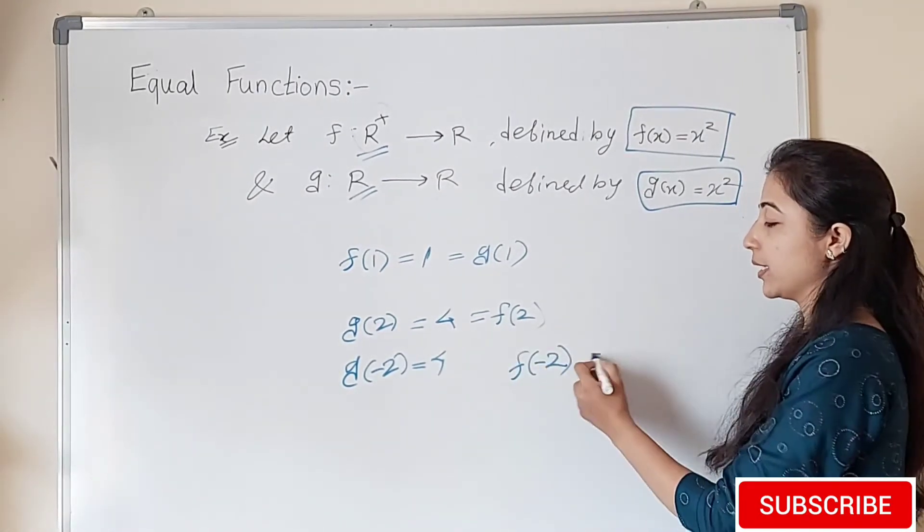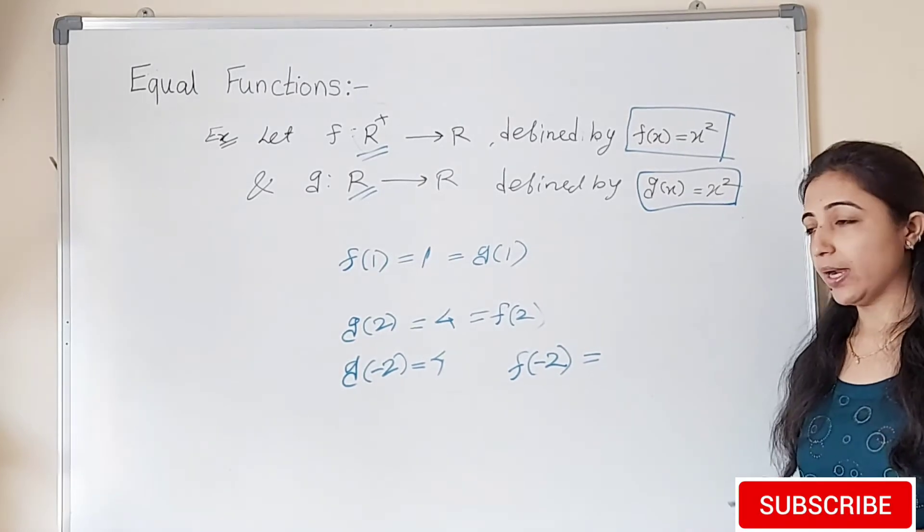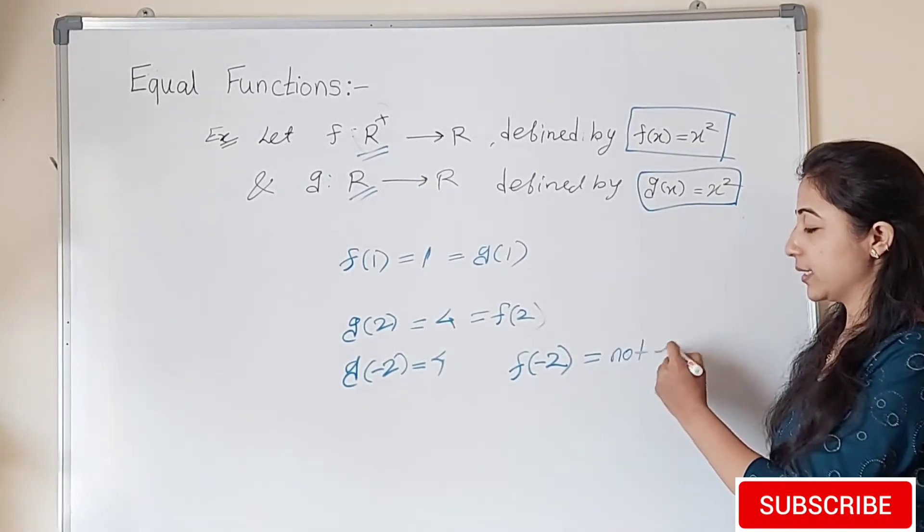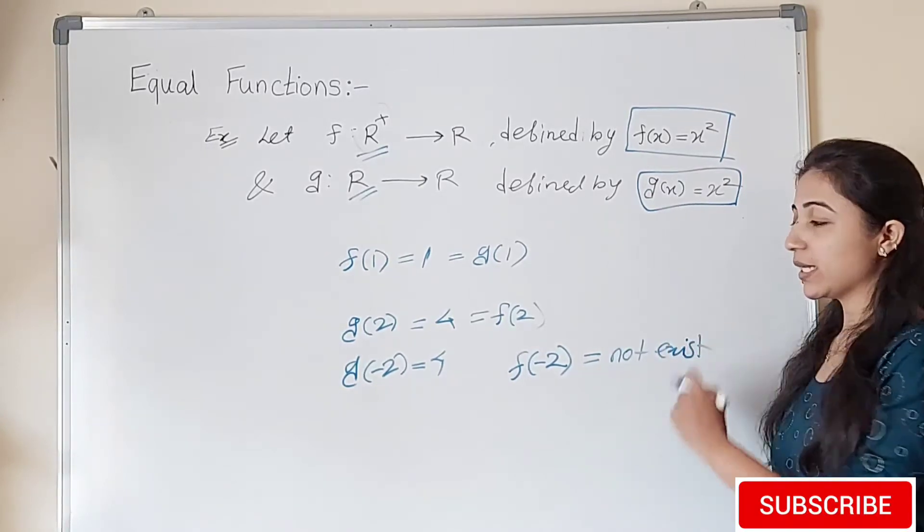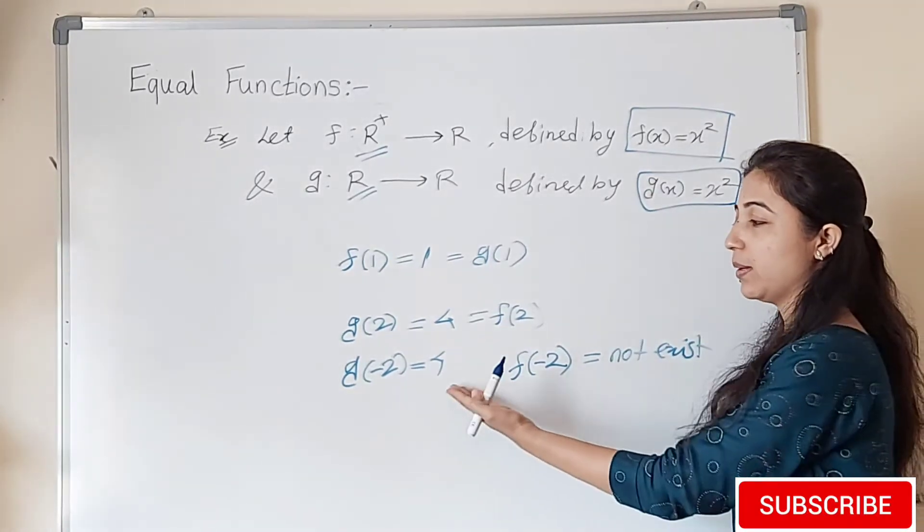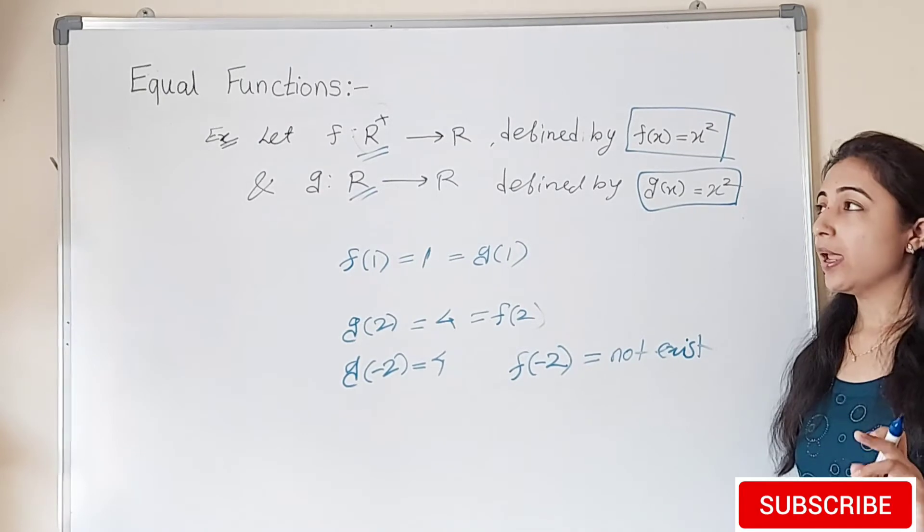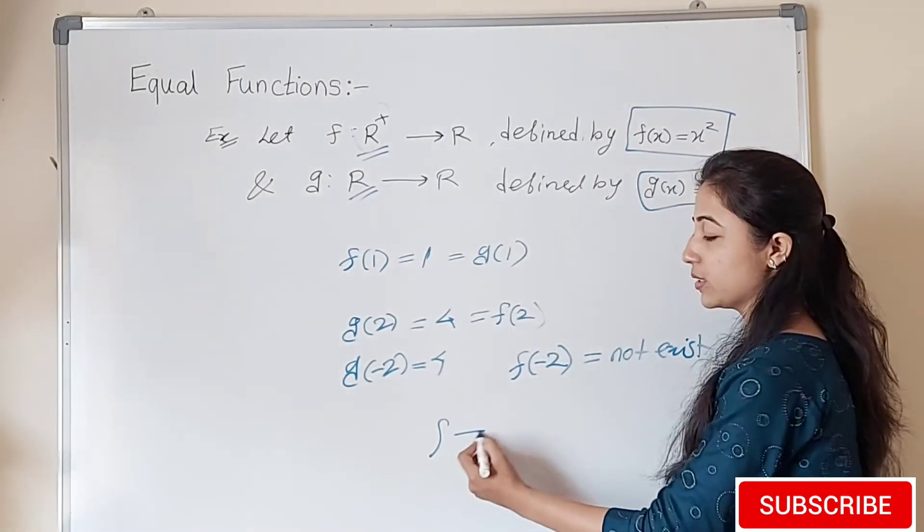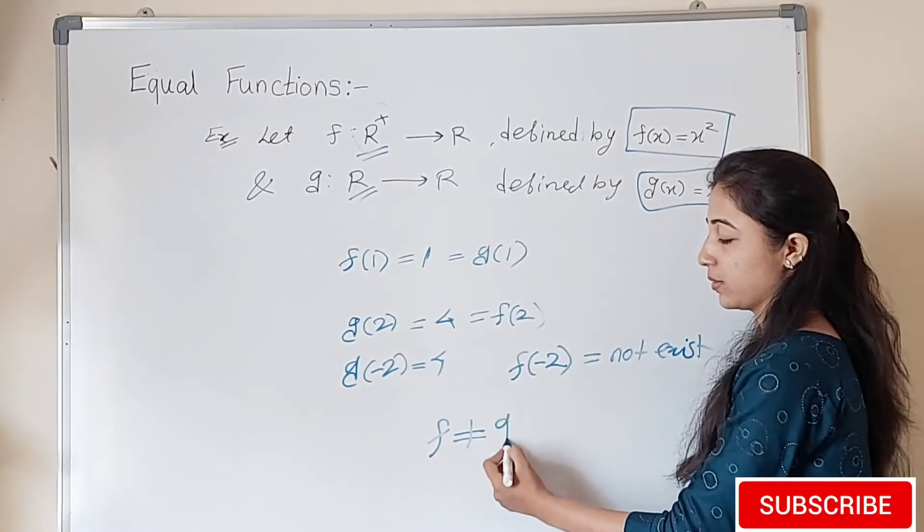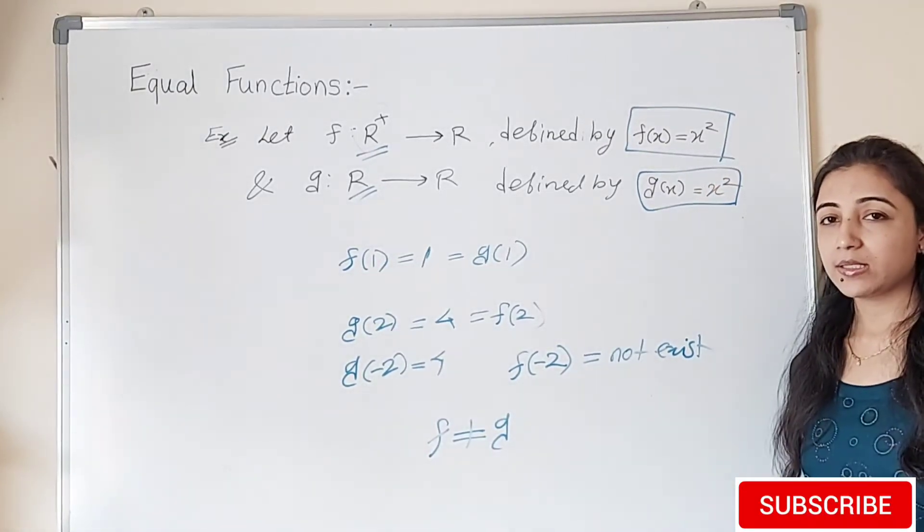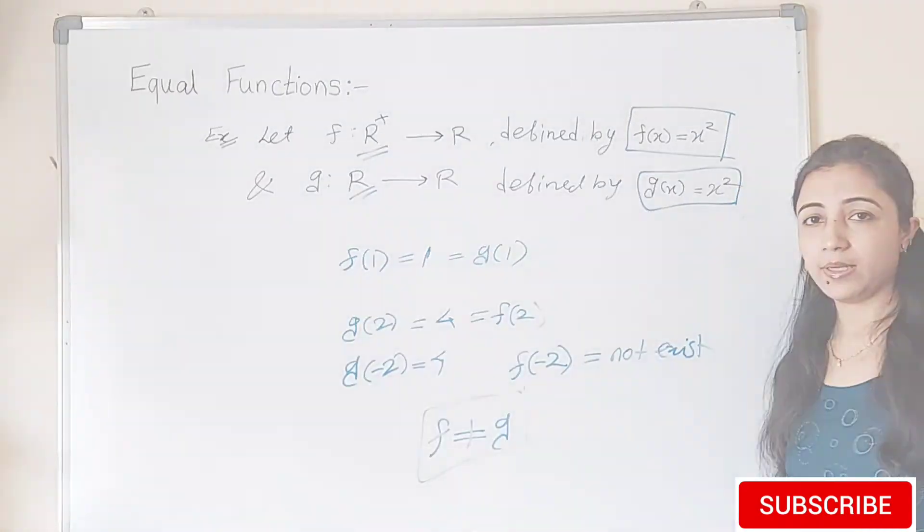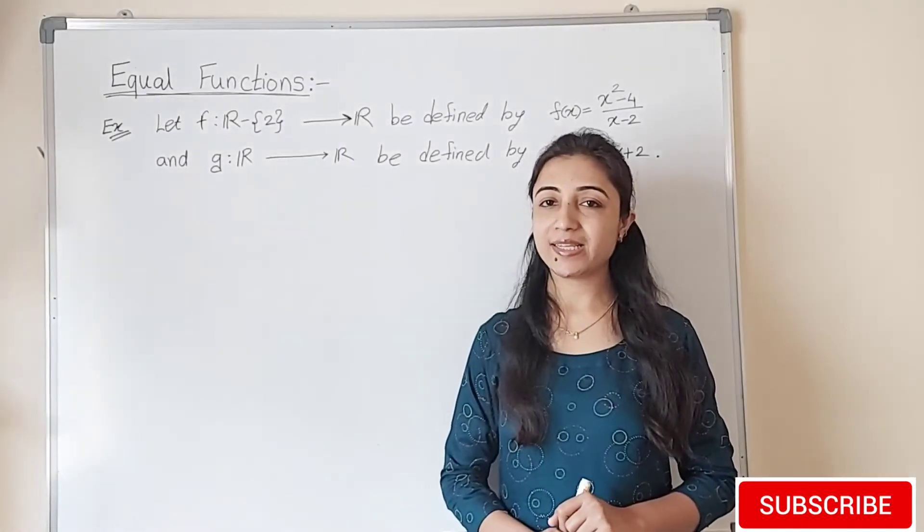So here this image exists in g, but here it doesn't exist in f. So f and g are not equal functions. Here f(x) is not equals to g(x). These two functions are not equal.